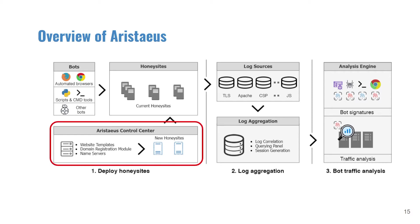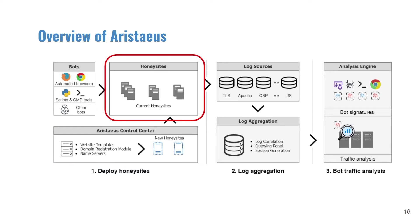The control center determines when and how to create honey sites. According to the list of domains, the control center spawns honey sites using AWS. The next part is our honey site. Honey sites are AWS instances populated and distributed around the world by scripts, installed with real web applications and equipped with various fingerprinting techniques. In the next slide, we will introduce what is inside a single honey site.